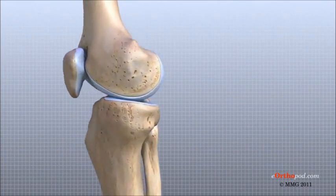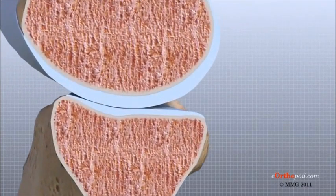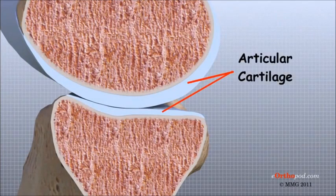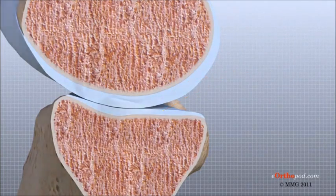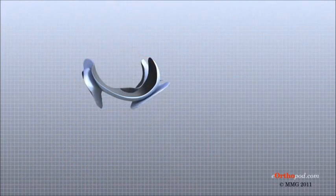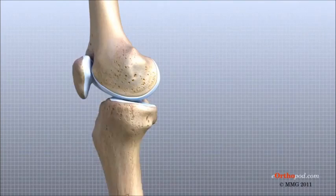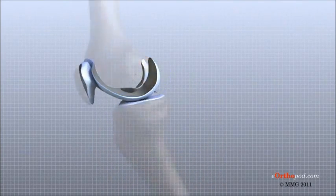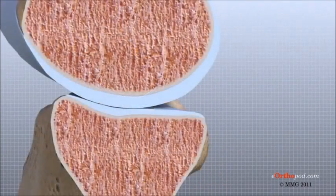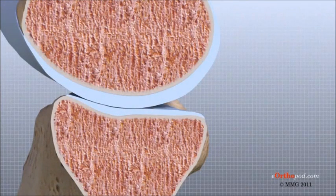Articular cartilage is the material that covers the ends of the bones of any joint. This material is about one quarter of an inch thick in most large joints. It is white and shiny with a rubbery consistency. Articular cartilage is a slippery substance that allows the surfaces to slide against one another without damage to either surface. Its function is to absorb shock and provide an extremely smooth surface to facilitate motion.